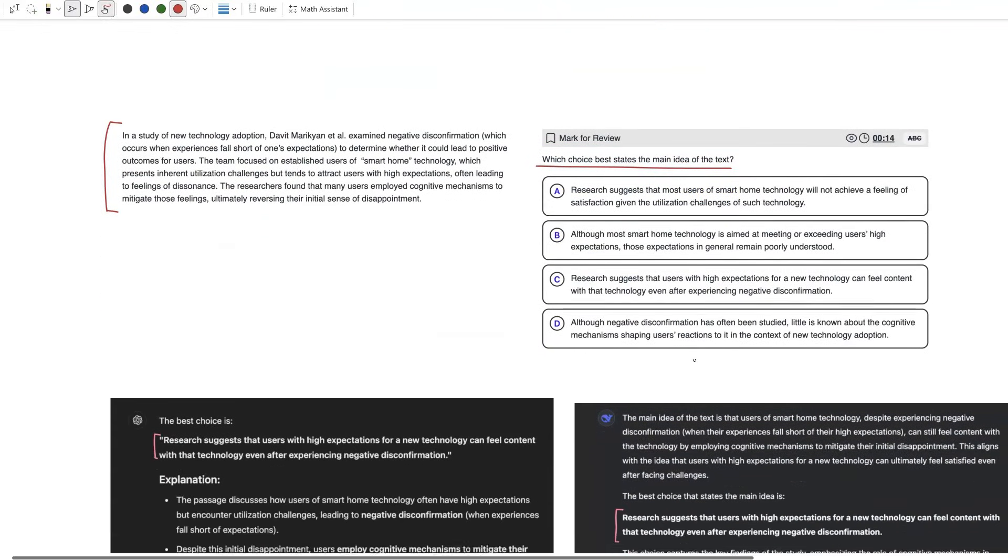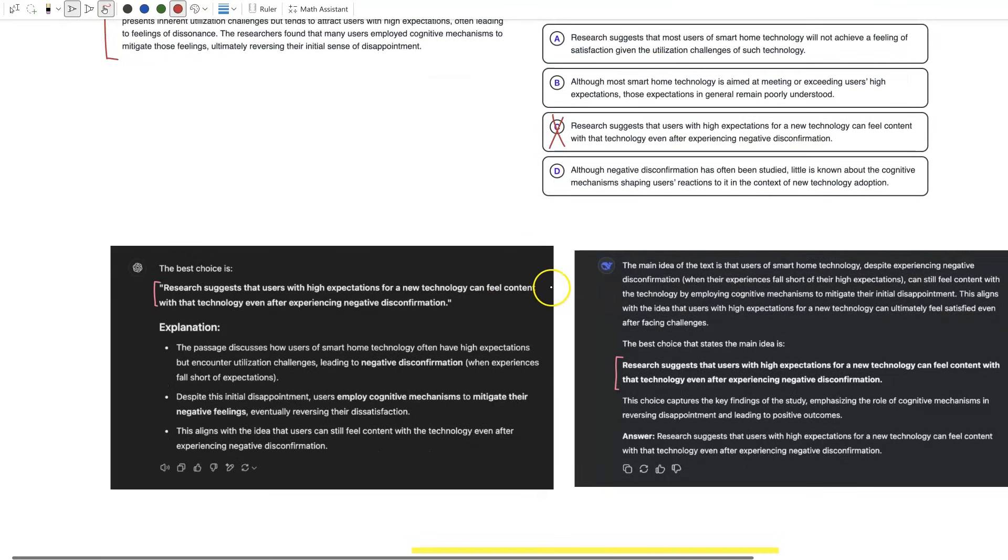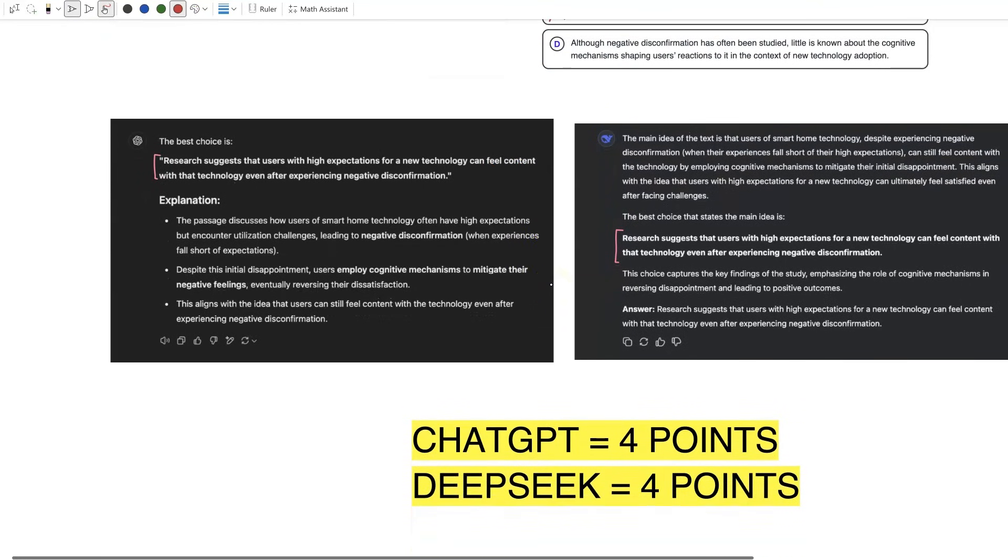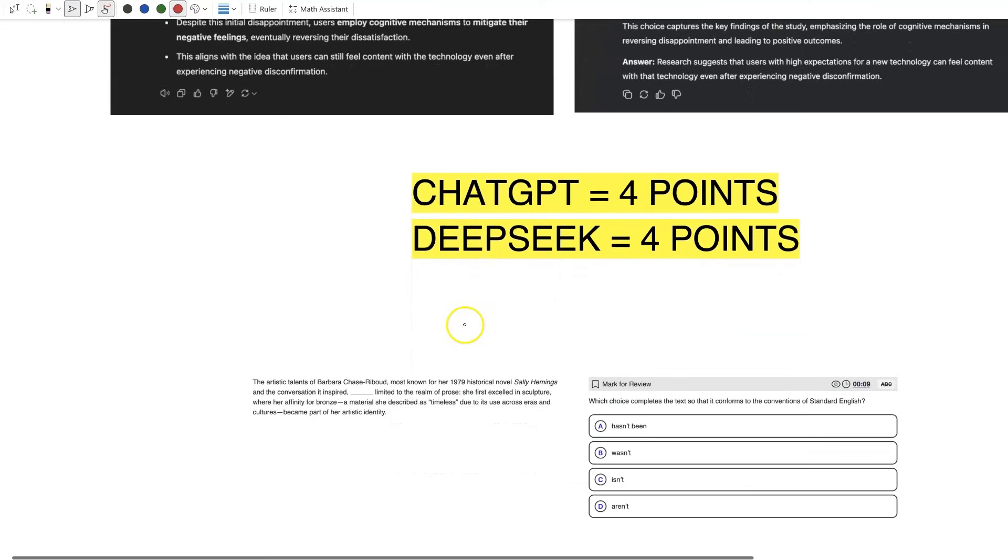Let's see what the AIs say. Looks like they both chose letter C as the answer, and that is correct. So C is the answer, and now they are both up to four points. It's tied, super close. We're going to move on to see if they both can answer the grammar question correctly.